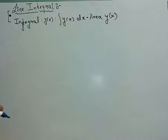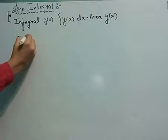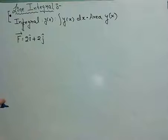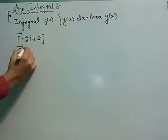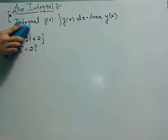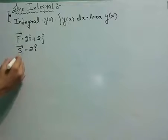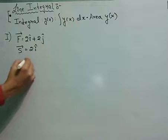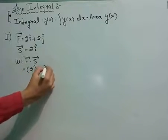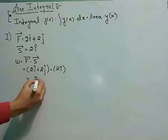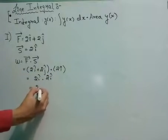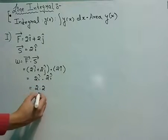Consider I give you a force F = 2i + 2j, and a displacement s = 2i. If I ask you to find the work done, you will say work done = F·s. So you get (2i + 2j)·(2i), which gives 2i·2i, because 2j·2i = 0. That gives 2×2 = 4, since i·i = 1. So the answer is 4.